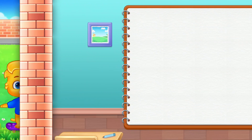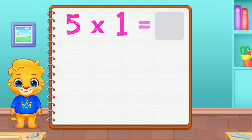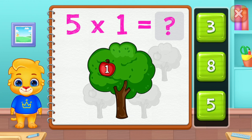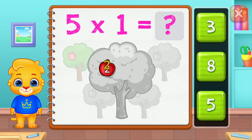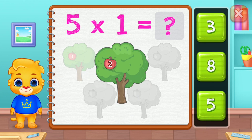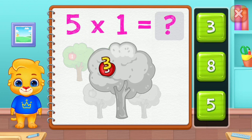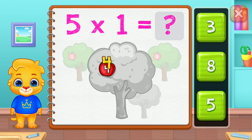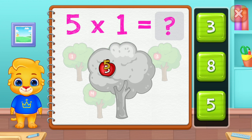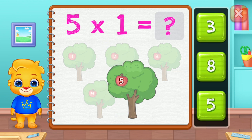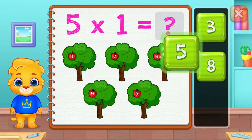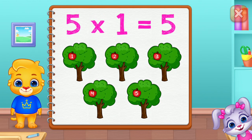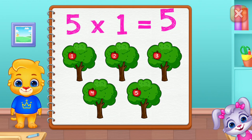One, two, three, four, five. Five groups of one equals five.